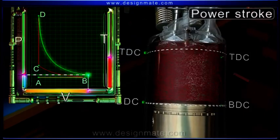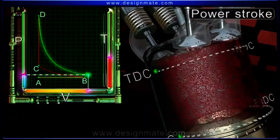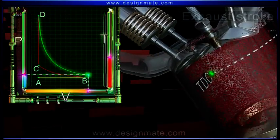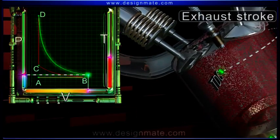When the piston reaches the BDC, the power stroke ends. Exhaust stroke. During this stroke, the exhaust valves open.